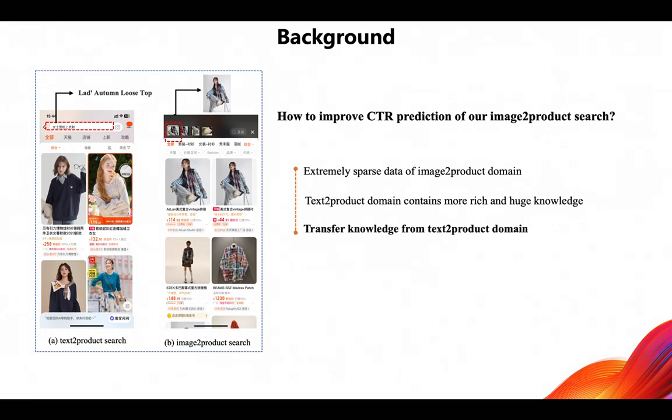For our image-to-product search, it faces a severe data sparsity problem, while the text-to-product domain, developed for so many years, has more rich and huge accumulated knowledge. So it is natural to consider, could we improve the CTR prediction of image-to-product search by using some cross-domain knowledge transfer techniques?